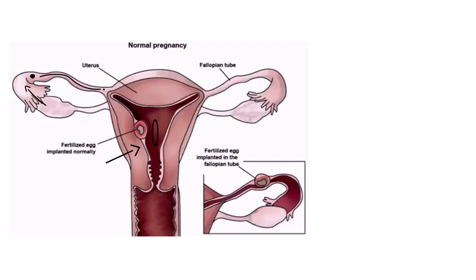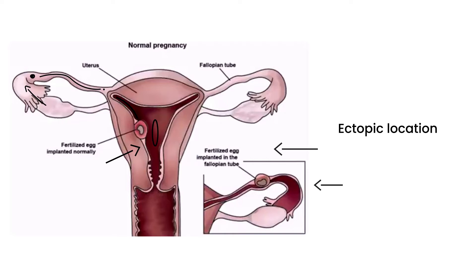That happens most of the time, but sometimes the fertilized egg implants itself in an ectopic location — meaning a location other than normal. There are several locations, but the most common is the fallopian tube. Other locations include the cervix or the abdominal or pelvic cavity, but by far the most common is the fallopian tube.